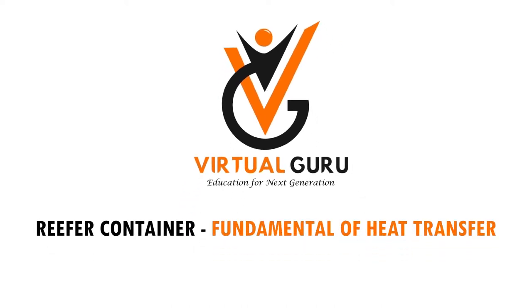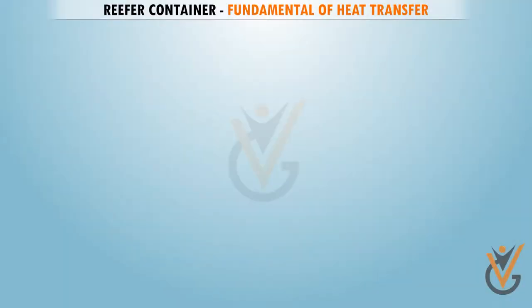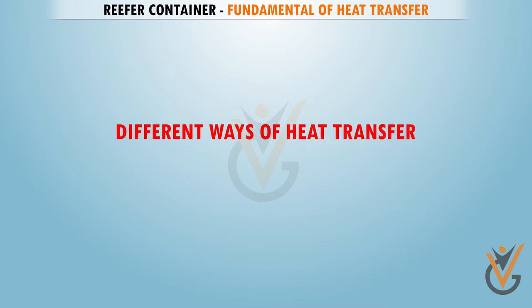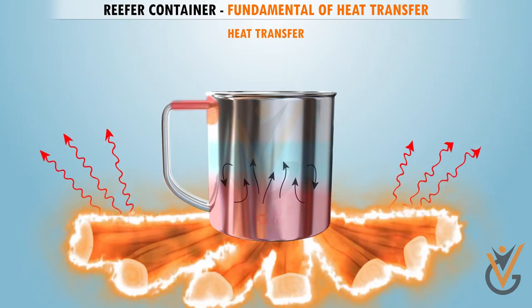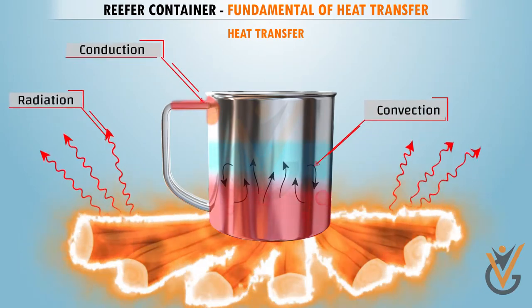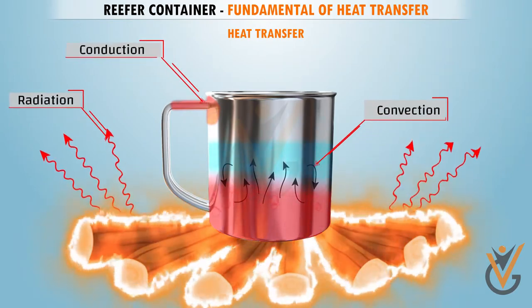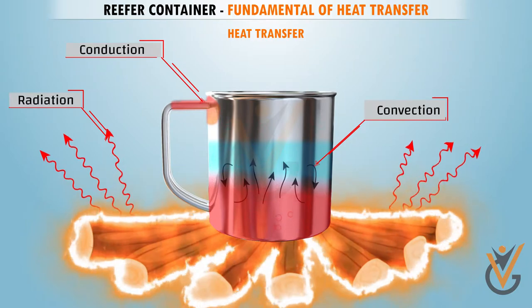Fundamentals of heat transfer. When you keep an object near burning wood, it becomes hot because of heat transfer. In this video we will learn about different ways in which transfer of heat can take place. Heat can be transferred from one object to another by conduction, convection, or radiation.